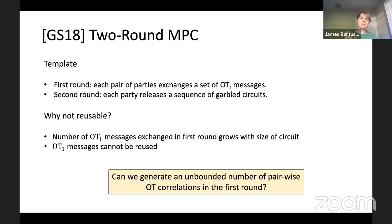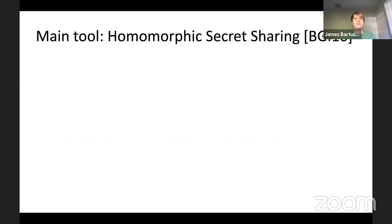A natural approach to make this template reusable is: could we use the first round to generate for each pair of players an unbounded polynomial number of OT correlations which they can then use in the second round? We want parties to exchange messages that allow them to create on the fly a huge amount of OT correlations that will be useful in the second round.